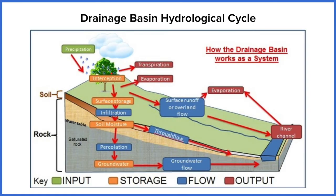From precipitation coming in, water can be intercepted. Interception is where vegetation stores water for short periods of time — it could be resting on the vegetation itself, or absorbed into it through natural processes and lost in other ways later on. If it's not intercepted, or after it's been intercepted, it may be stored as ground storage or surface storage, which is more likely to be puddles or lakes.